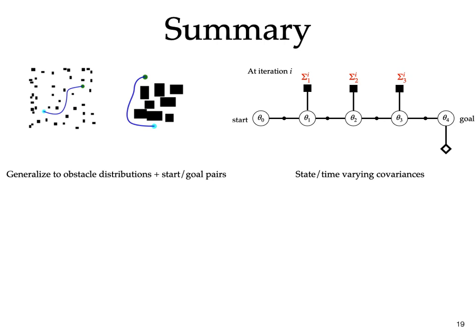We can also use the structure of the planner to incorporate other planning constraints, such as velocity or joint limits. For more details, please refer to the paper.